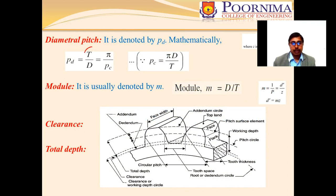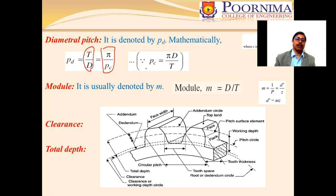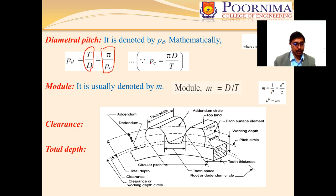The diametrical pitch is T/D. Substituting values, we get pc = πD/T. The module is the ratio of the pitch circle diameter in millimeters to the number of teeth, usually denoted by m, where m = D/T.